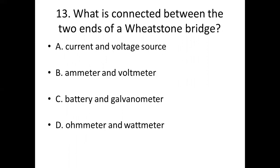Thirteenth bit. What is connected between the two ends of a Wheatstone bridge? Option A: current and voltage source. Option B: emitter and voltmeter. Option C: battery and galvanometer. Option D: ohmmeter and wattmeter.